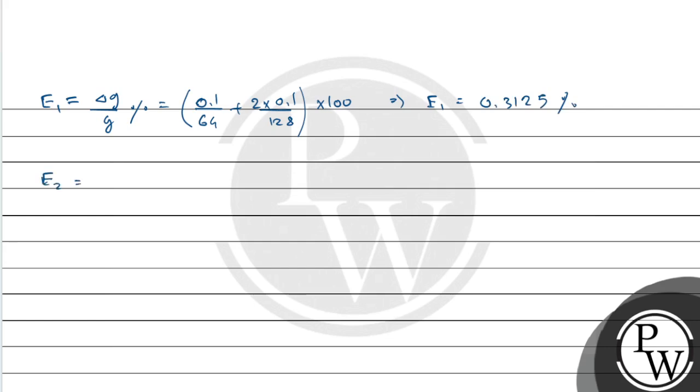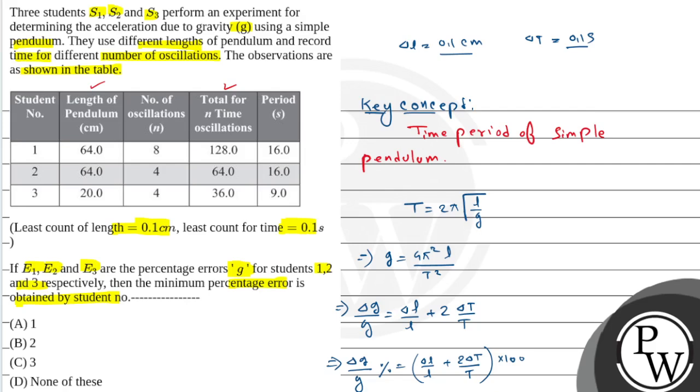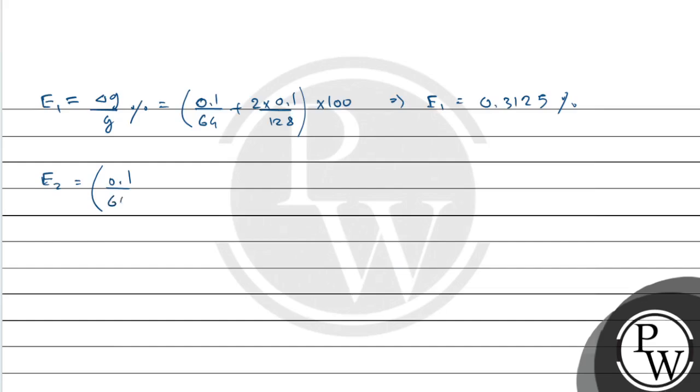Now E2 equals del L that is 0.1 by... Second student's length was 64 and time was 64. So del L by 64 plus 2 into 0.1 by 64 into 100. E2 is 0.4688 percent.